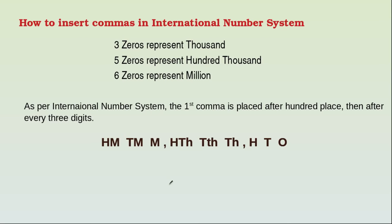Now we will see one example. They give a number and we want to place the commas as per the international number system. The first comma starts after the hundreds place — ones, tens, hundred — then a comma, then after every three digits: one, two, three, then comma, then one, two, three.